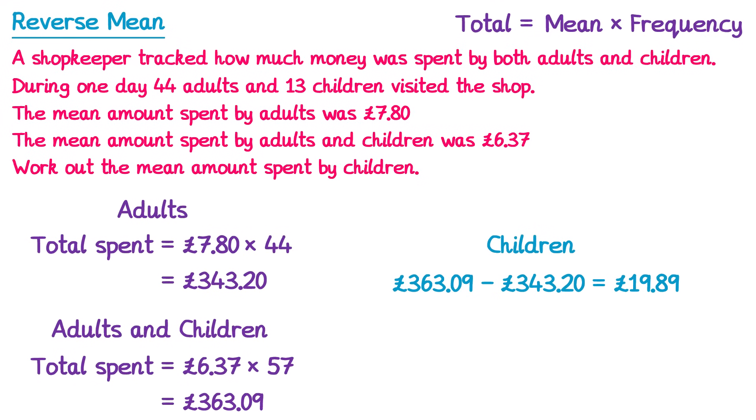All we need to do now to work out the mean amount spent by children is divide £19.89 by how many children there were. In the question we're told there are 13 children, so we take £19.89 and divide it by 13, which gives you the answer £1.53.